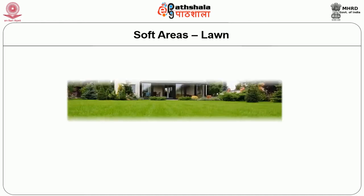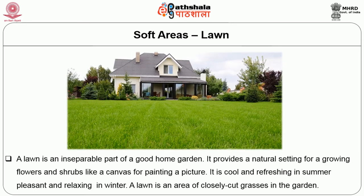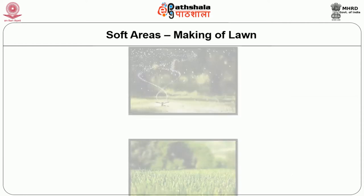Then we will discuss the soft areas. A lawn is an inseparable part of a good home garden. It provides a natural setting for growing flowers and shrubs, like a canvas for painting a picture. It is cool and refreshing in summer and pleasant and relaxing in winter. A lawn is an area of closely cut grass in the garden.